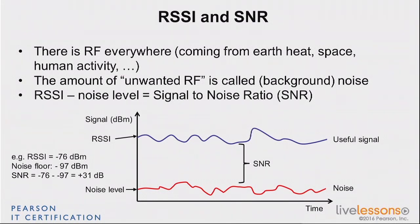Depending on what you're trying to achieve, that could be good or bad. Typically, 31 dB is very good. Something below 10 dB is typically a problem. A good condition is anything above 20 dB, so 30 dB is a pretty good number. So that was noise, but as you work in a Cisco environment, you will hear about noise, and you will also hear about interference. This is different.